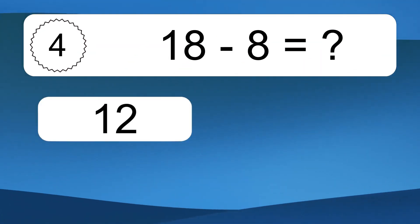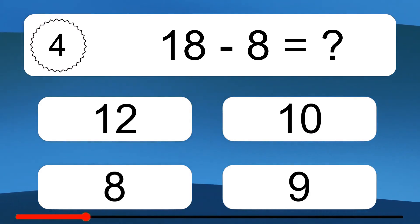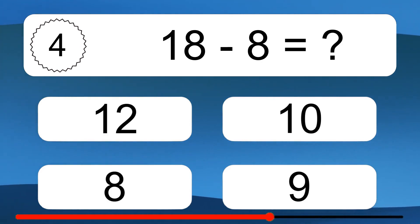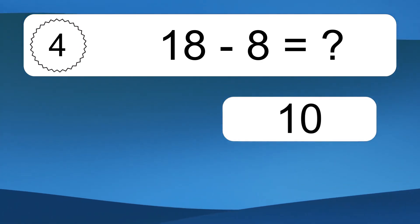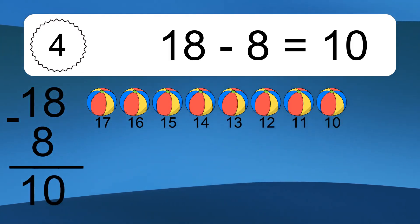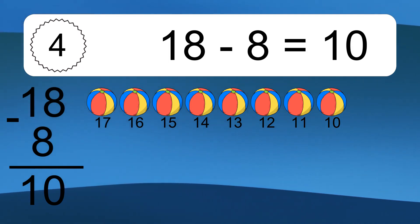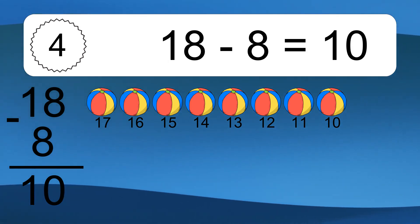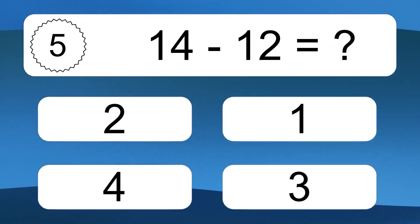18 minus 8 equals what? 18 minus 8 equals 10. Let's count it. 17, 16, 15, 14, 13, 12, 11, 10.